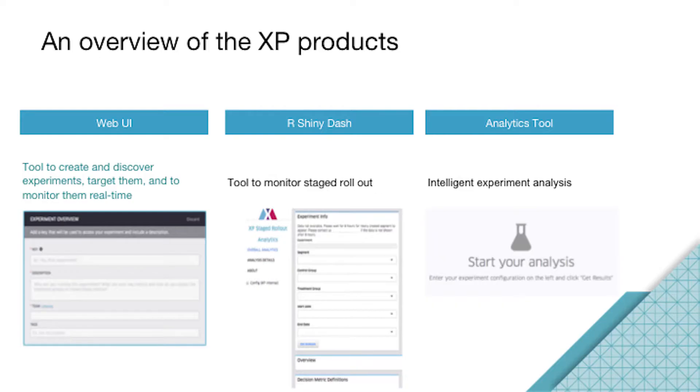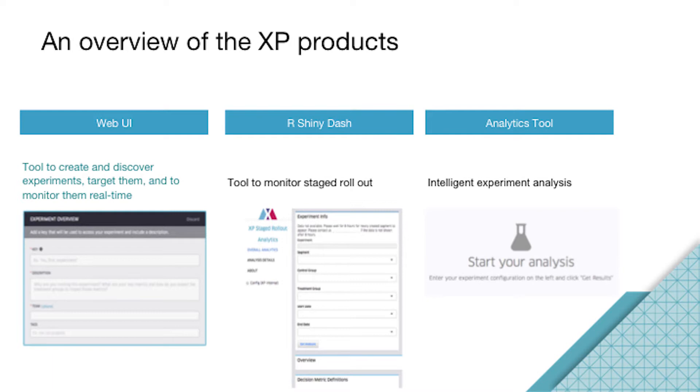After you launch an experiment, you want to monitor the health. We have this R Shiny dashboard to tell you the primary metrics and secondary metrics you want to look at. Everything is great, there's no crashes, no outage. Then at the end, you want to do some post-experiment analysis. You can go to our tool and discover the business performance metrics.